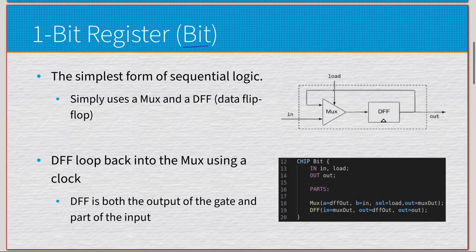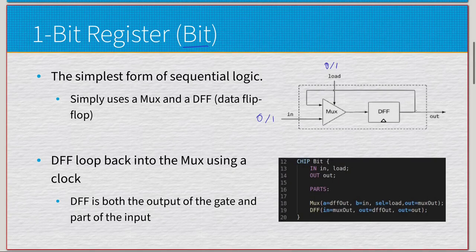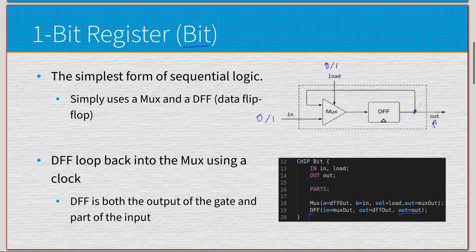The data flip-flop is both the output of the gate and part of the input. We have a single one-bit input — zero or one — and a one-bit select pin. When load is one, the data flip-flop takes the actual input and passes it out for the clock cycle. The path diverges into two points: part goes to the output, which is the 'out equals out' part of the DFF, and the other part feeds back into the mux — that's 'out equals DFF out.' The other input to the mux is the overall input.